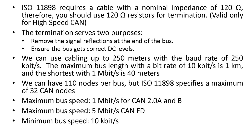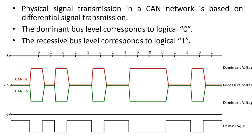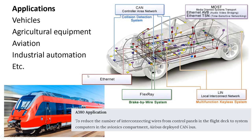The minimum bus speed is 10 kilobits per second. Physical signal transmission in a CAN network is based on differential signal transmission. When we have a dominant bus level, that corresponds to a logical zero, and when we have a recessive bus level, that corresponds to a logical one.